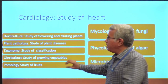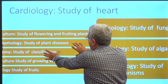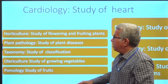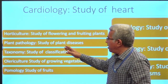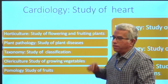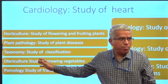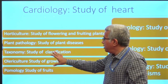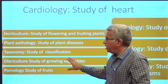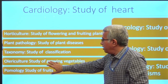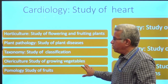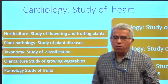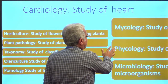Now let us go to the branches of botany. Arboriculture is the study of flowering and rooting plants. Plant pathology deals with the study of plant diseases. Taxonomy is a common branch of both botany and zoology — it deals with the study of classification. Floriculture is the study of growing vegetables, and pomology is the study of fruits.